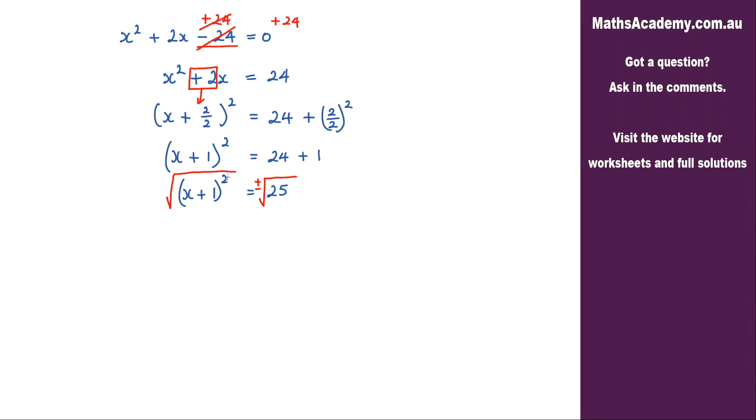Now on the left hand side the square root and the squared will cancel so we're just left with x plus 1 and on the right hand side we've got the square root of 25 which is 5 but just remembering that it's going to be plus and also the minus 5 so plus or minus 5.